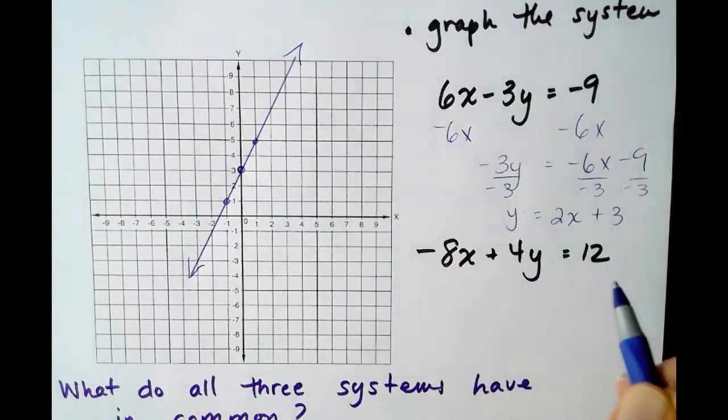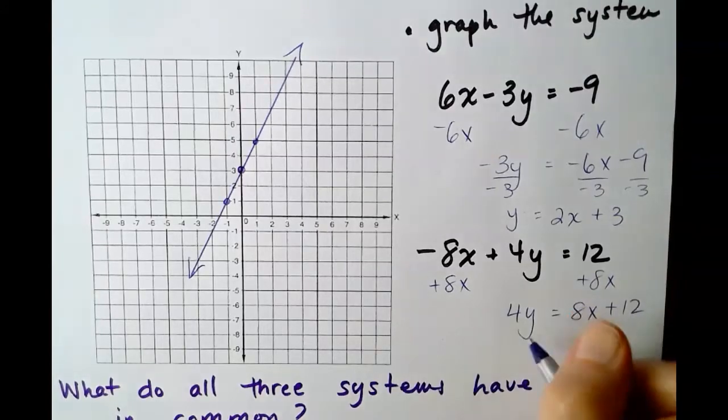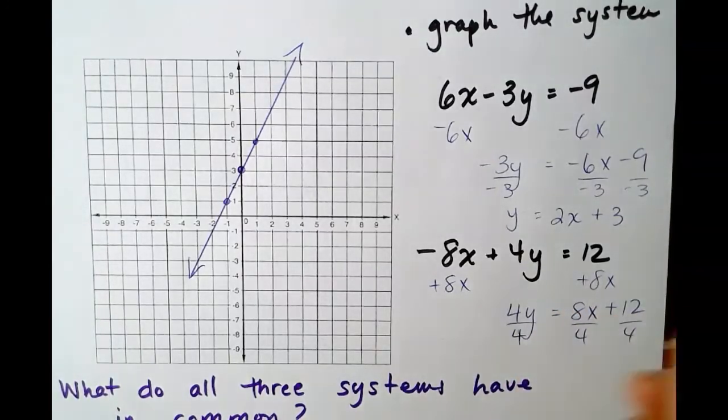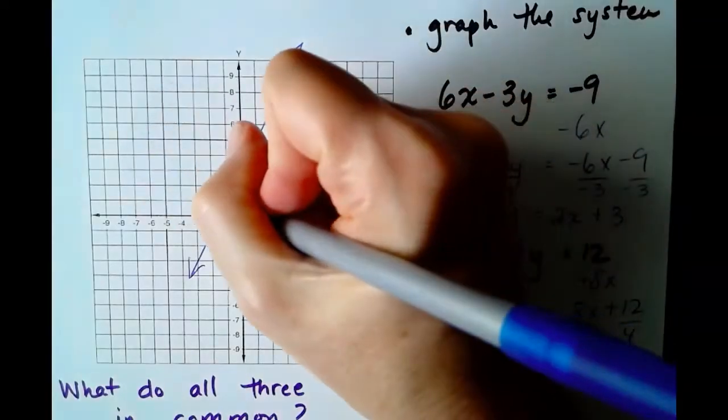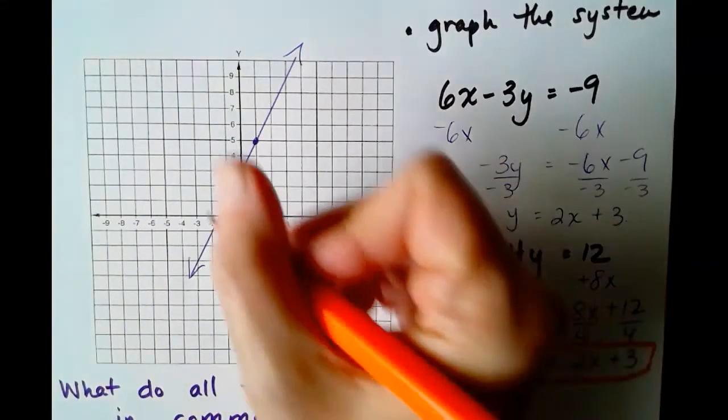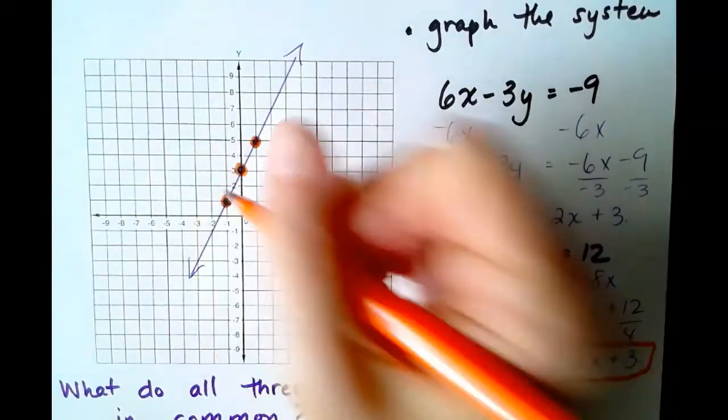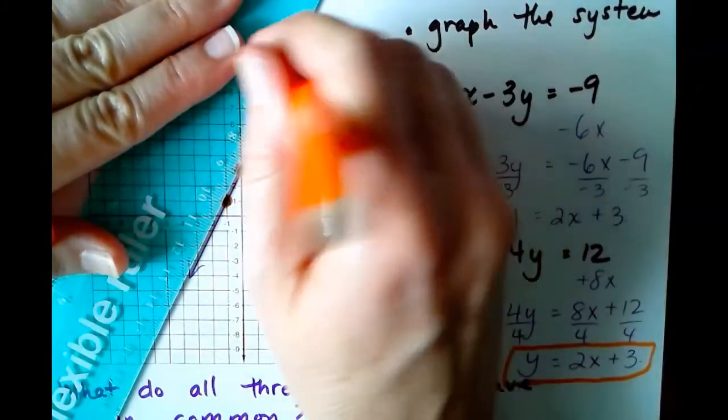Let's do the next line. Negative 8x plus 4y equals 12. So plus 8x, plus 8x, 4y equals 8x plus 12, divide by 4, divide by 4, divide by 4. Y equals 2x plus 3. This second equation is representing exactly the same line. So if I were to come and graph this second line in orange, where would it be?